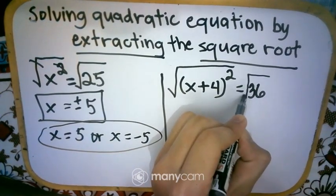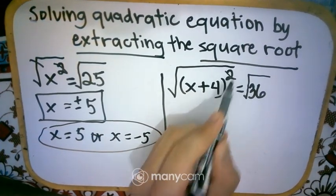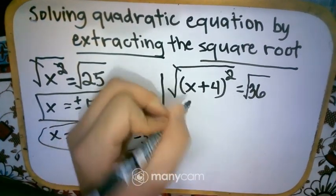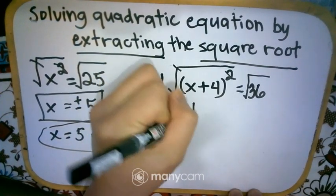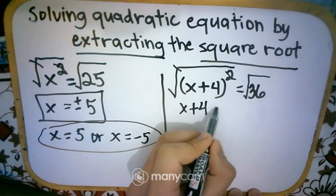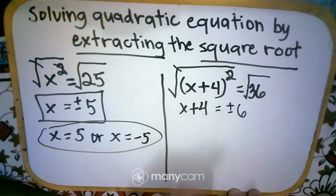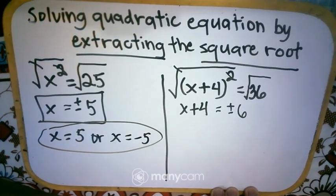So remove, or rather, put square root or radical sign. So cancel 2. So what will remain is x plus 4. So we can remove already the quantity. Is equal to positive negative 6. So don't forget to put positive negative 6.